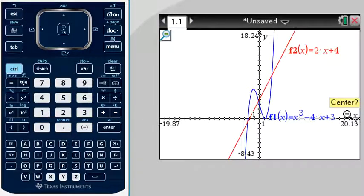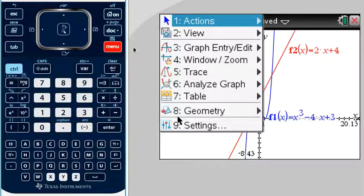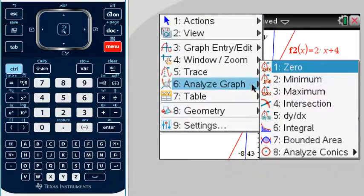1, 2, 3 points of intersection. So now, if I go menu, analyze graph again, but I'm going to find intersection.